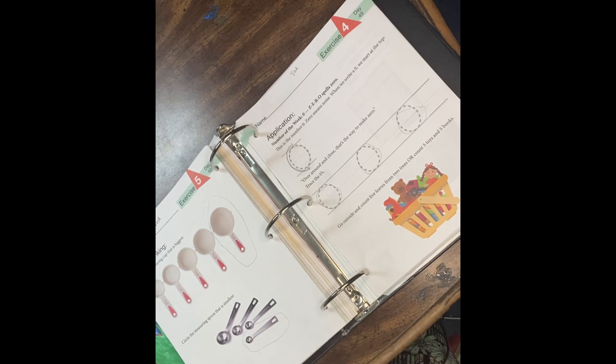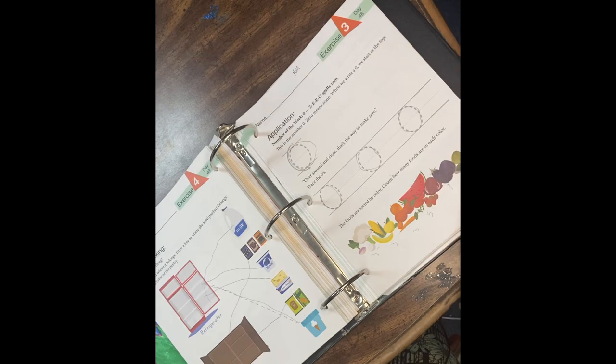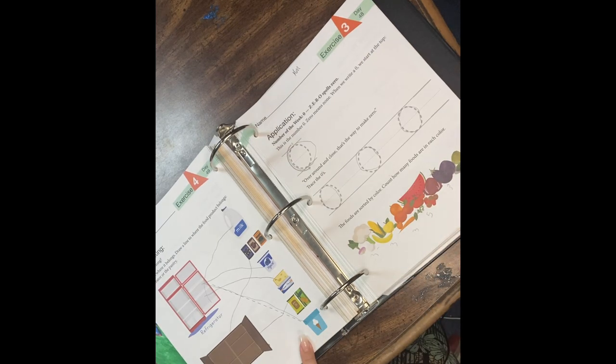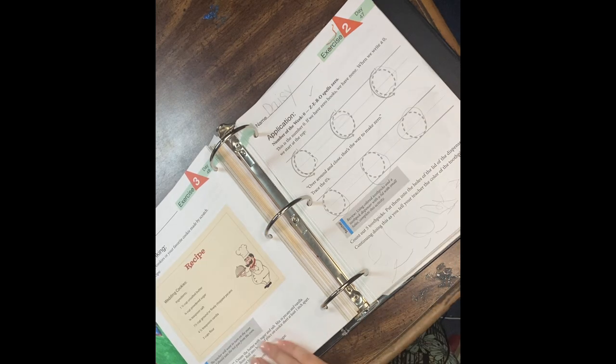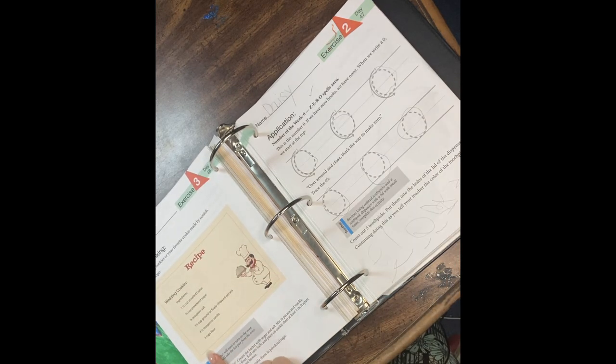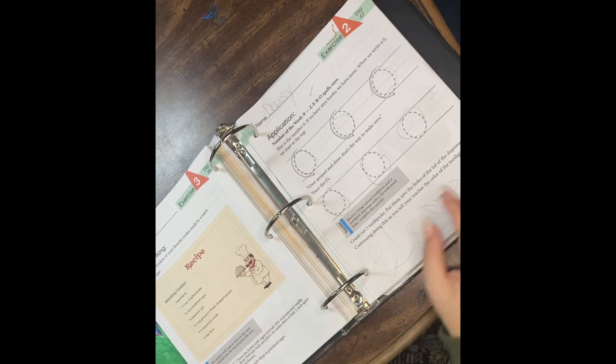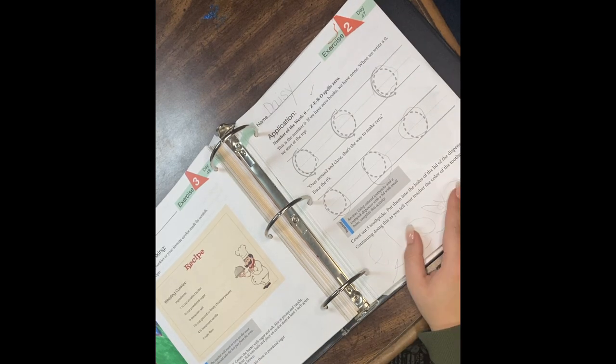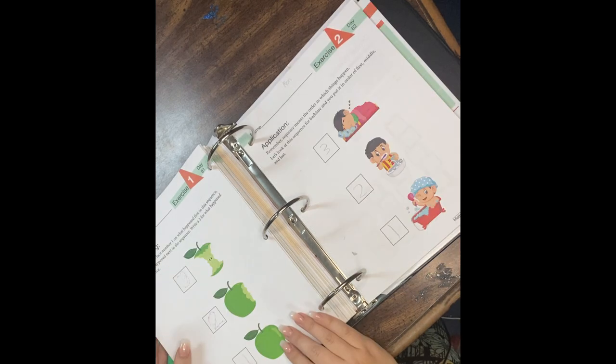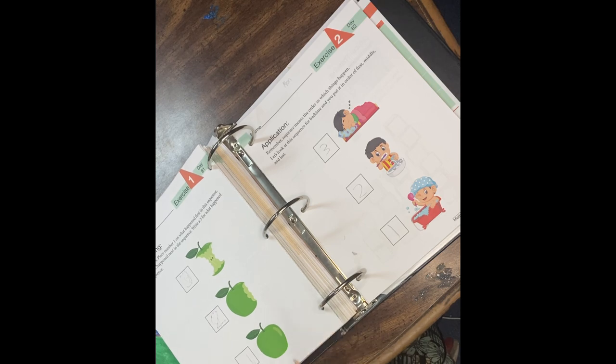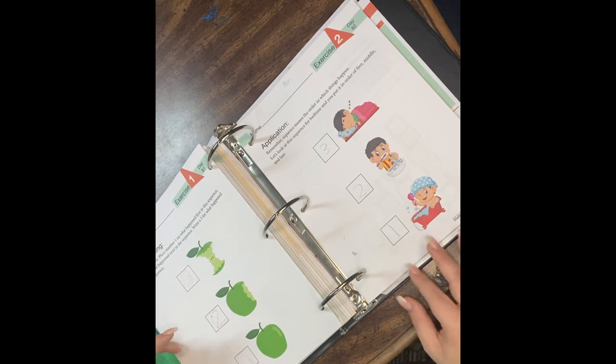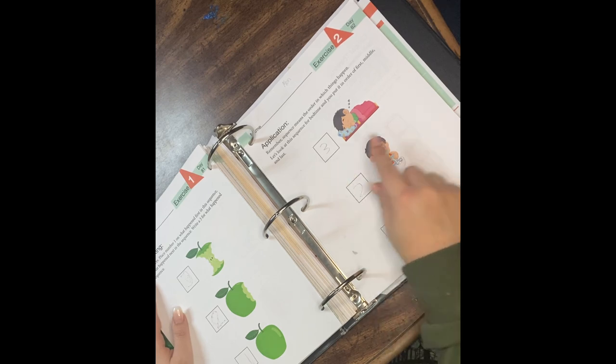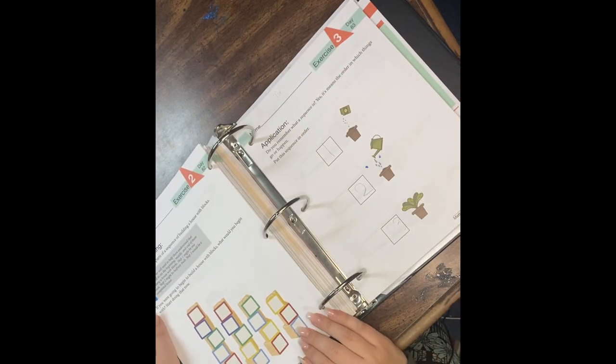She practiced writing the number, circling the measuring cup that is the biggest and the measuring spoon that is the smallest. This book has really sparked an interest in cooking in her—she is with me in the kitchen constantly now. There's an exercise about where each item belongs, tracing a line to what goes in the refrigerator or the pantry. It gives you a recipe to teach her how to make wedding cookies, but we ended up skipping this and doing a different recipe.